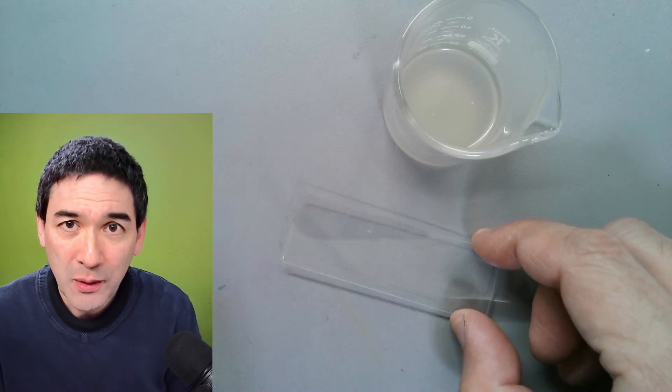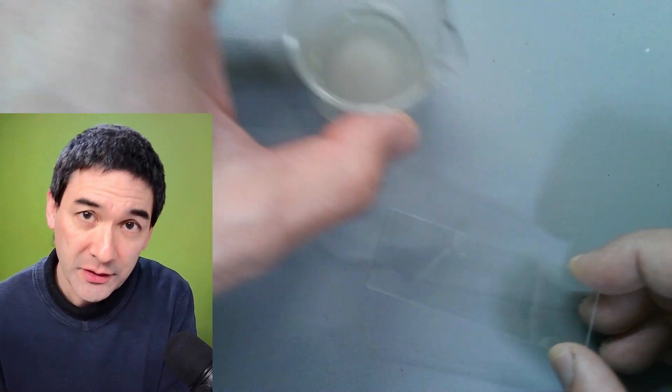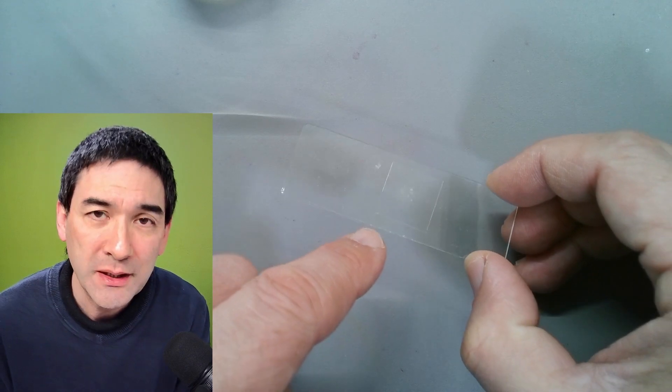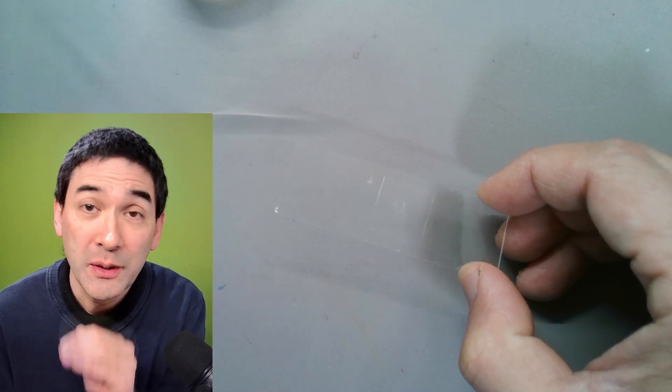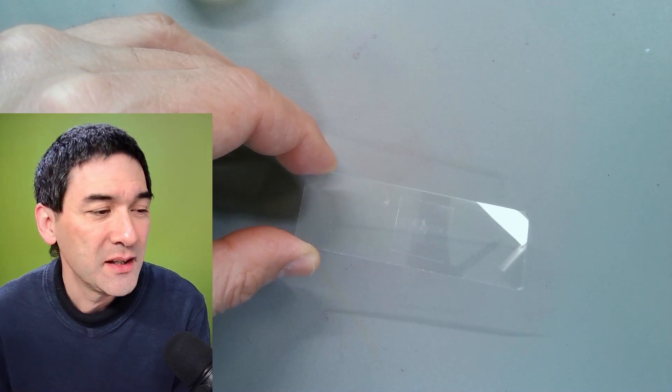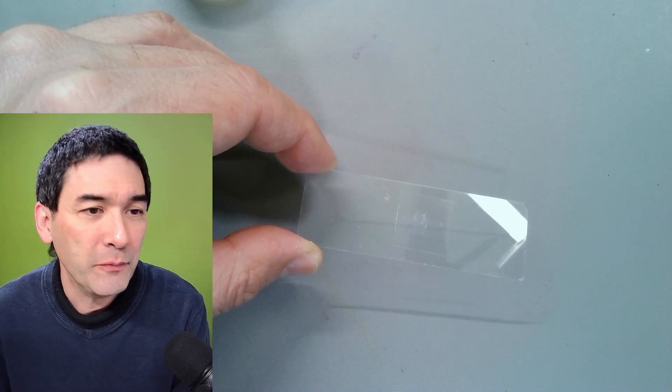Generally, if you want to observe bacteria and other smaller microorganisms, always use very little water, because otherwise the bacteria are going to swim vertically and that's more difficult to observe. Let's switch over to the microscope view.